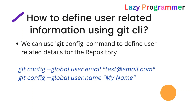The syntax for git config is: 'git config --global user.email' followed by your email value — this adds configuration at a global level with key 'user.email'. Similarly, for name: 'git config --global user.name' followed by your name. This is how you define user-related information using the Git command line interface.